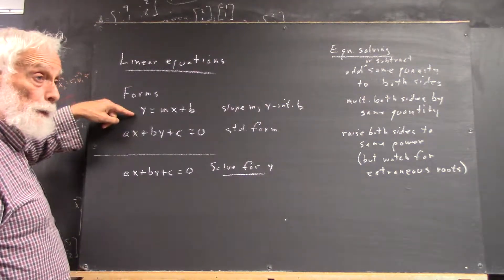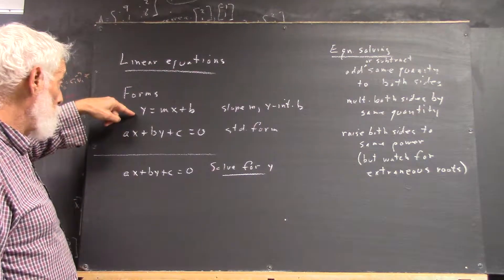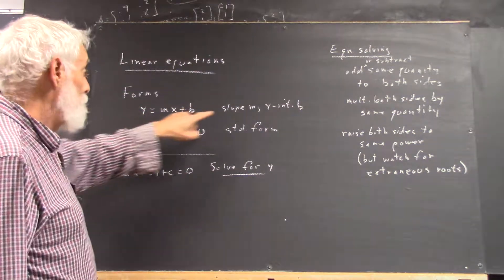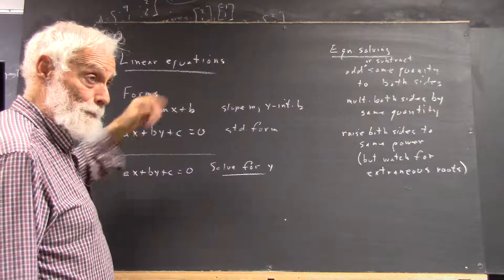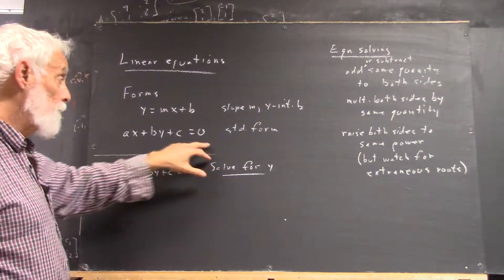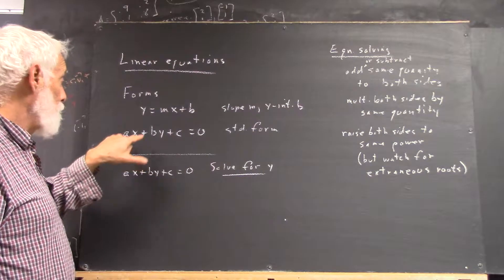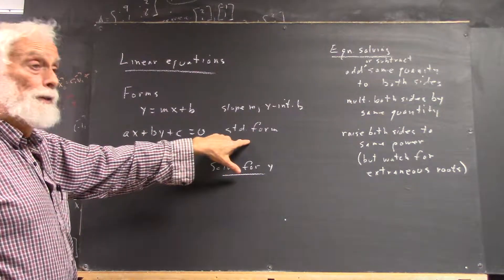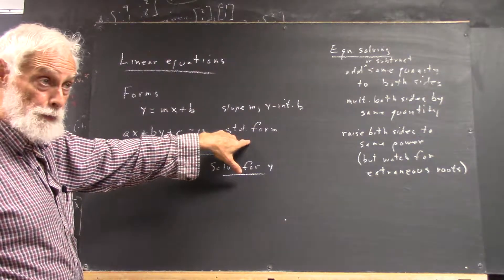So the forms of linear equations. This is a form called the slope-intercept form. Slope is m, y-intercept is b, right? This is a standard form. Some multiple of A plus some multiple of B plus some other number equals zero is what's usually called the standard form of a linear equation.